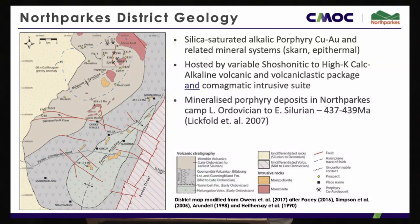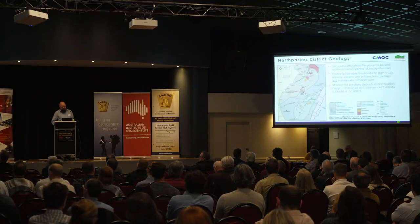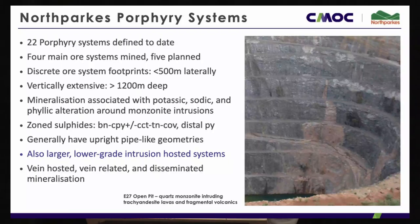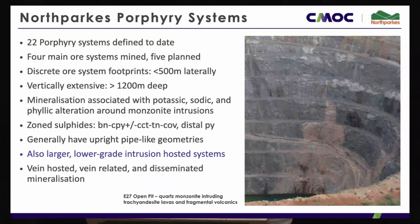I am not touching on that at all. We're going to be zooming into the Monzonite suite that intrudes that volcanic package, and then in again to look at what intrudes the Monzonites themselves. Before we do that, I'd be remiss not to put some general characteristics out there. The laundry list has us at 22 porphyry systems discovered or defined to date — the definition being that you're able to put your finger on a causative mineralising intrusion.